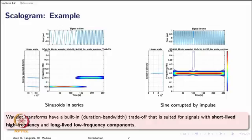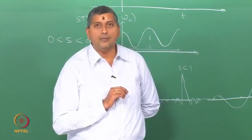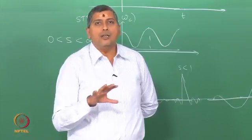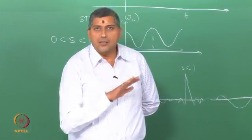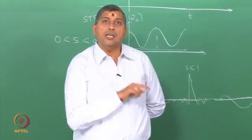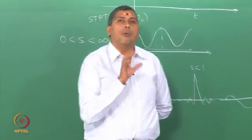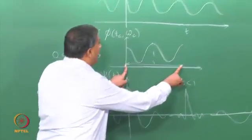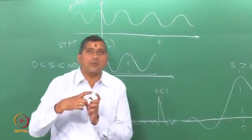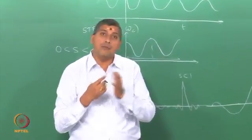We have a sinusoid corrupted with an impulse disturbance. Without any user intervention, it is able to detect the discontinuity as well as the sine wave. Whereas in the spectrogram, although we did not discuss this in detail, one has to adjust this width effectively to capture both the impulse and sine wave.